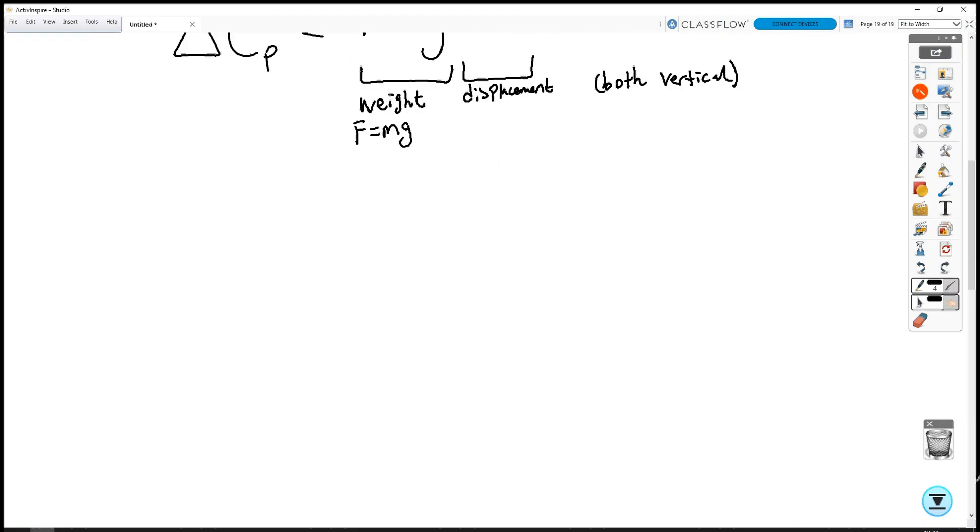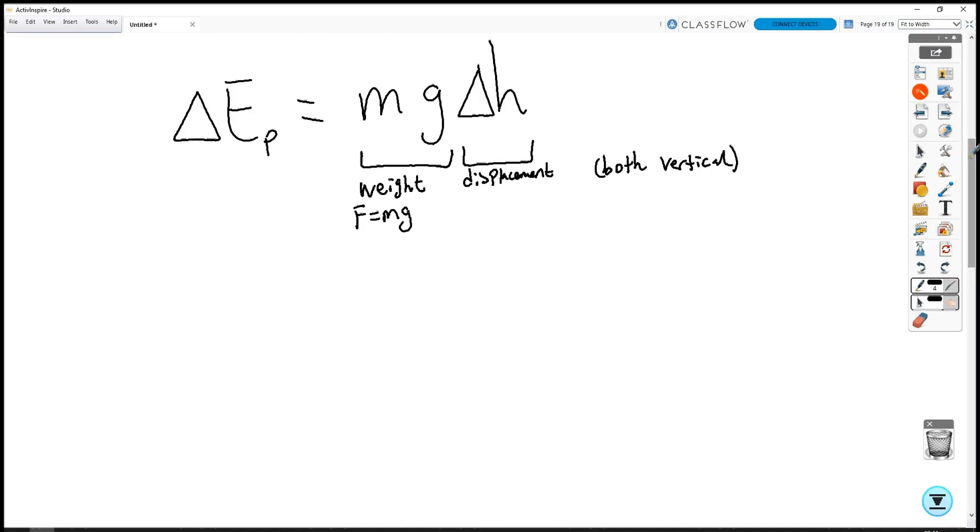Now, what if there was an angle between the force that was applied and the displacement of the object? In that case, you just have to resolve the displacement into components where one of its components are parallel to the force and only use that. So let's look at an example.